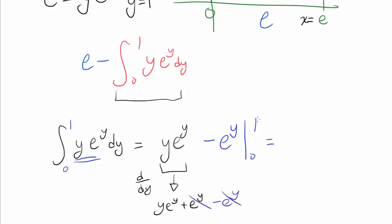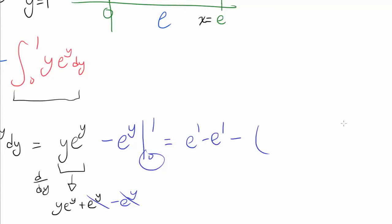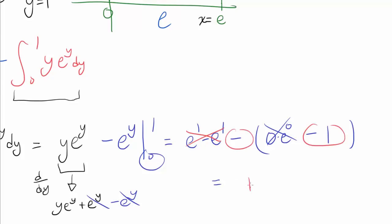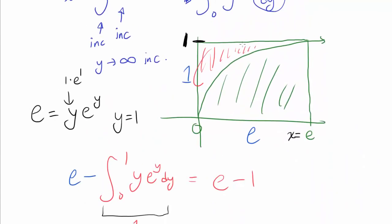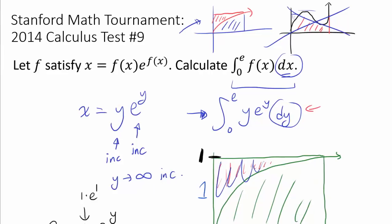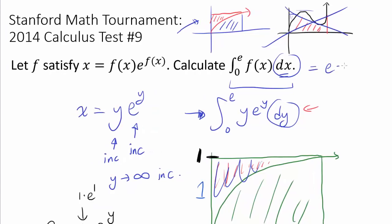Now let's integrate from 0 to 1. At y equals 1 we get 1·e^1 minus e^1, which is 0. At y equals 0 we get 0·e^0 minus e^0, which is 0 minus 1, or negative 1. So the integral is 0 minus (negative 1), which equals 1. Therefore the red area is 1. The area of the entire rectangle is e, so the integral we're looking for is e minus 1.